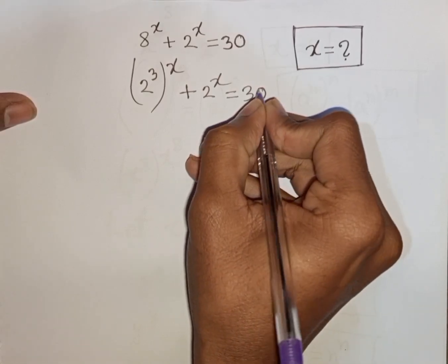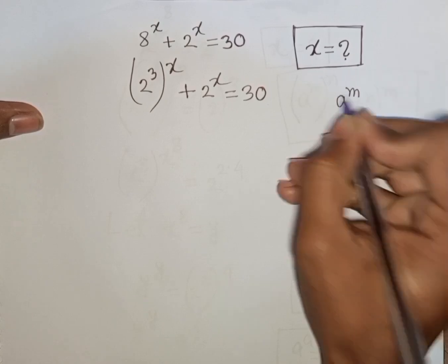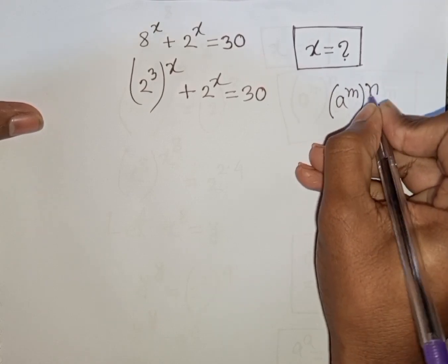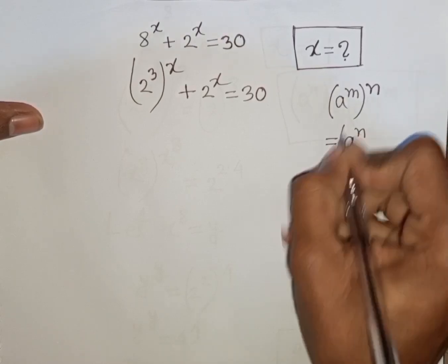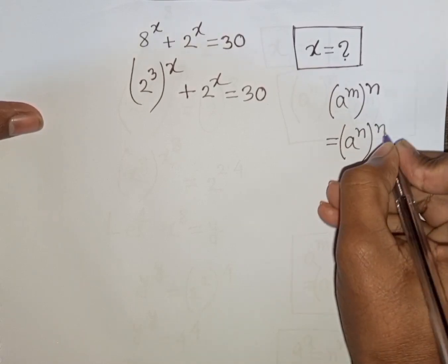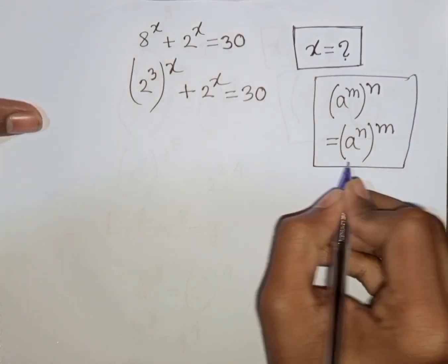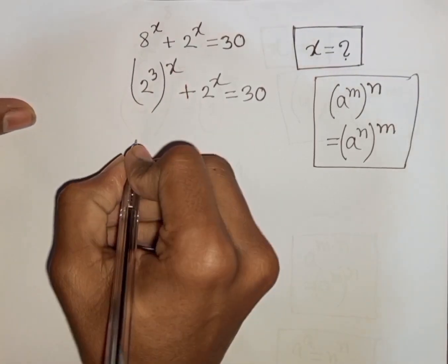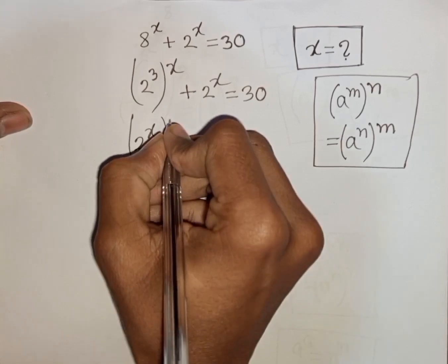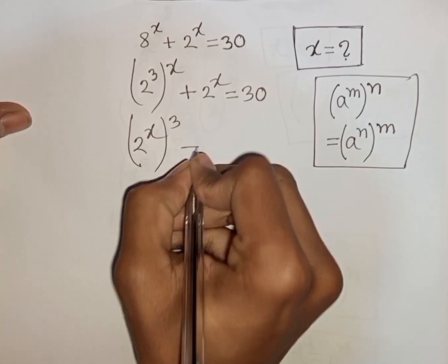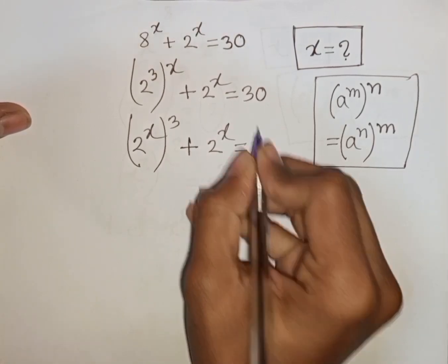Now, here you can apply the exponential rule that a power m, bracket power n, is equal to a power n bracket power m. So according to this rule, we can write here 2 power x then bracket power 3, plus 2 power x, is equal to 30.